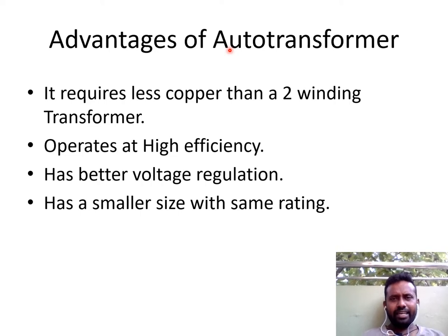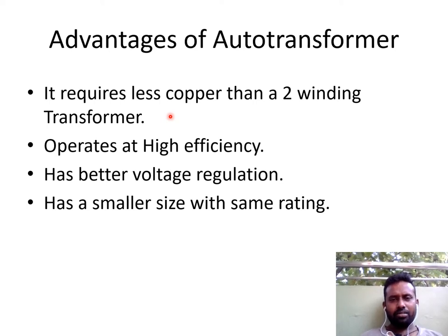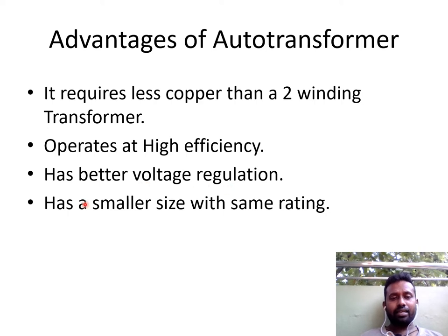Why do we study the auto-transformer? What are the advantages of going for an auto-transformer? It requires less copper than a two-winding transformer — this is one of the main advantages, so the cost is reduced. Also, the efficiency of this auto-transformer is very high, and it also has better voltage regulation. It is of smaller size with the same rating as a two-winding transformer. These are some of the advantages of the auto-transformer.